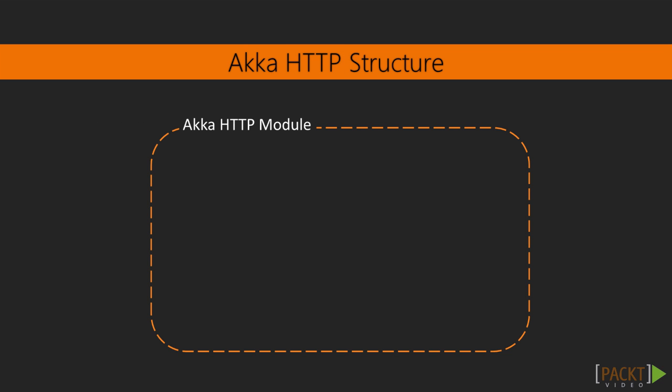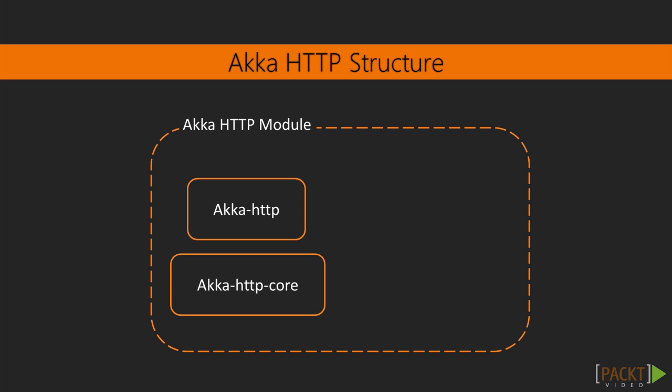Akka HTTP is structured into several modules. Akka HTTP Core contains a complete low-level server and client-side implementation of HTTP, such as connection and TLS management. Akka HTTP contains higher-level functionality such as marshalling, compression, decompression, as well as a powerful routing DSL for defining HTTP-based APIs on the server side. Akka HTTP Test Kit contains a set of utilities for verifying server-side service implementations.